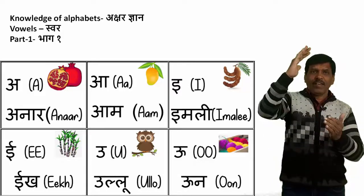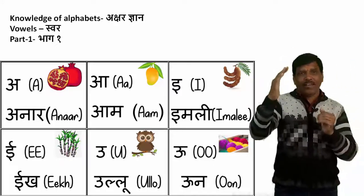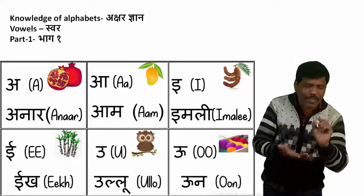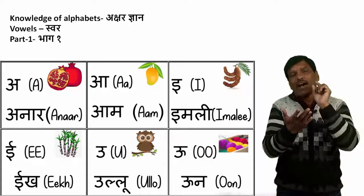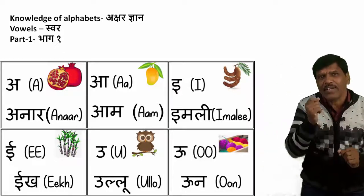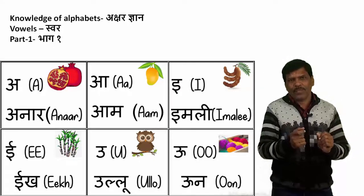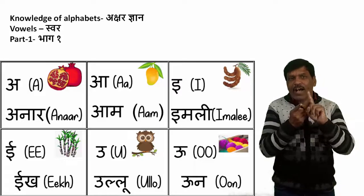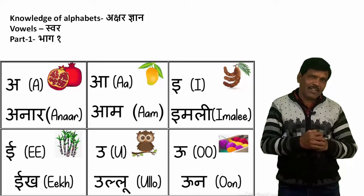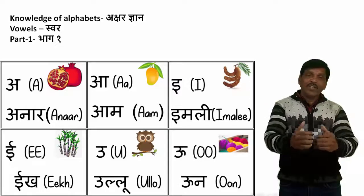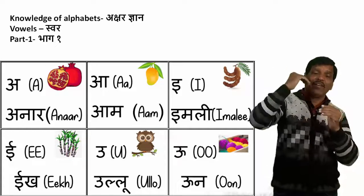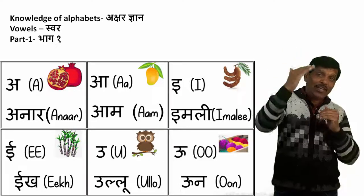In Hindi we say chhoti I and badi II — small I and big II. I is for engine. We denote small I with the English letter I. Small I like we say I for Imli — Imli is tamarind. Then comes the double II — the buddy ee, bigger ee. When single I, we use small i; when double, we say badi II.